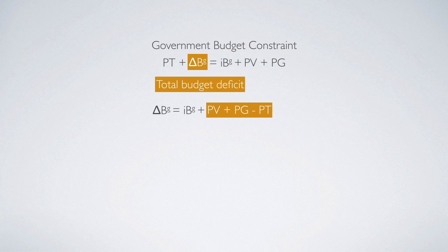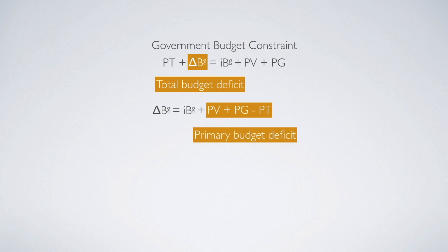A lot of the time we will focus on the last three items — expenditure for transfer payment and for government purchase minus tax revenue. We exclude the part of the interest payment, so these last three terms are sometimes called the primary budget deficit. Therefore, a country's government total budget deficit actually consists of primary deficit plus the debt service payment, which is the interest rate times the outstanding balance of public debt.